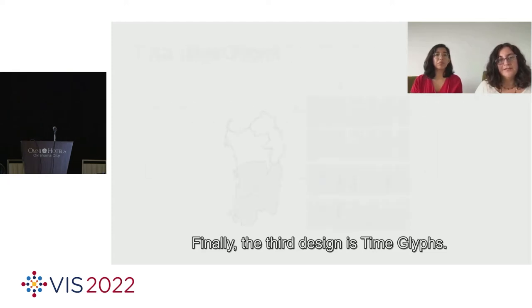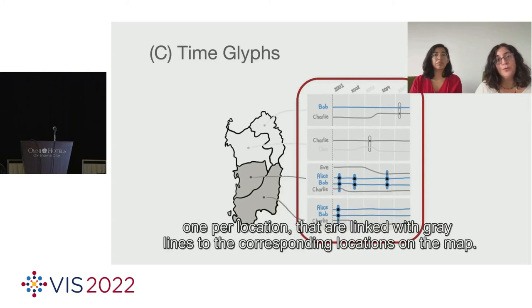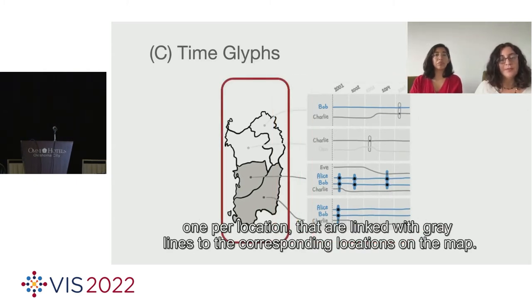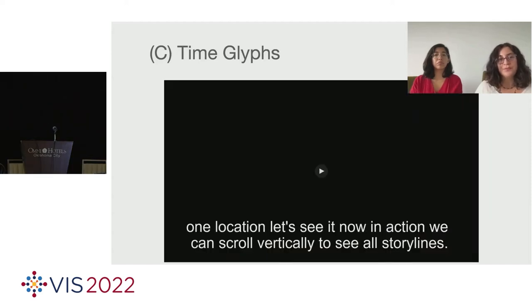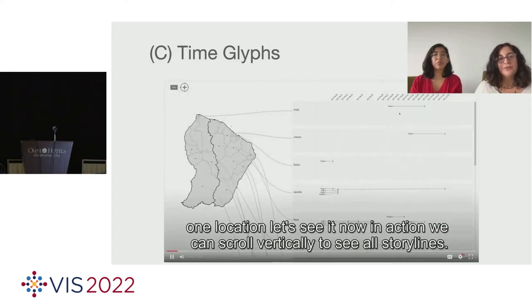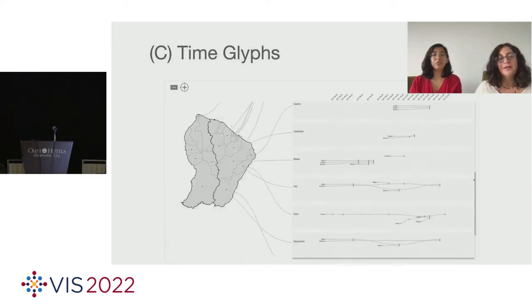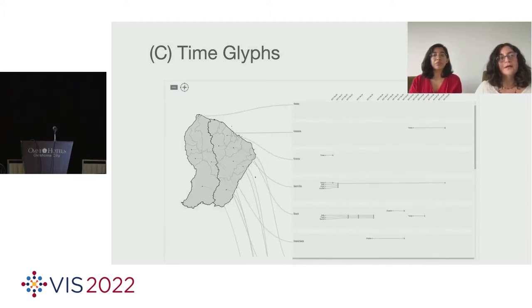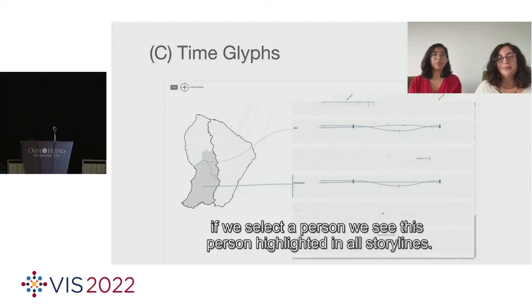Finally, the third design is Time Glyphs. In this design, we have on the right several storyline glyphs, one per location, that are linked with gray lines to the corresponding locations on the map. So each individual storyline glyph only shows the people and relationships related to that one location. We can scroll vertically to see all storylines. We can select a location to bring their storyline into focus. If we select a person, we see this person highlighted in all storylines.